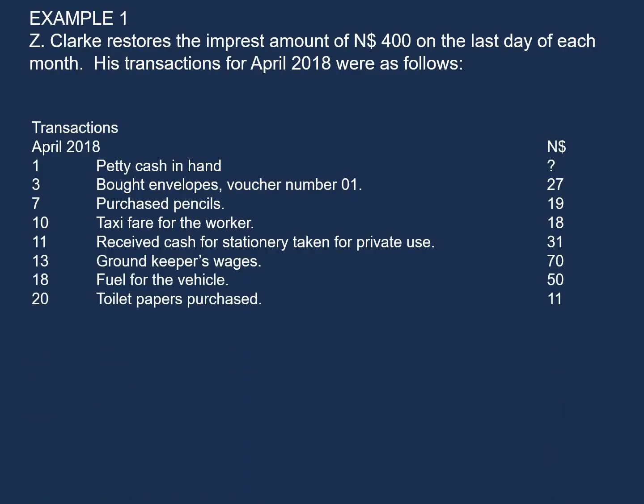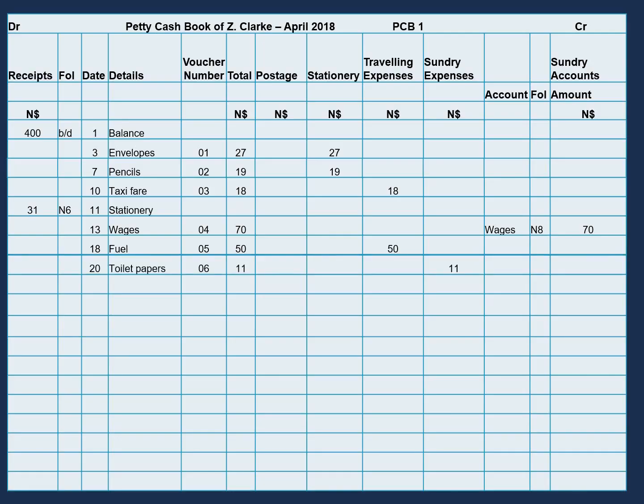Our next transaction is toilet paper purchased, $11, on the 20th. Details: toilet paper, voucher number 06, total amount $11. This will be classified under sundry expenses because it does not fit under postages, stationery, or traveling expenses.